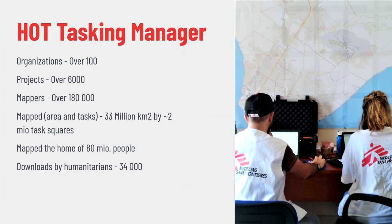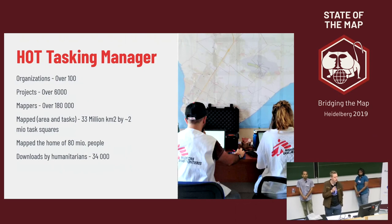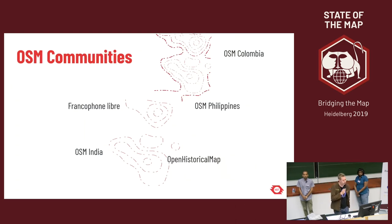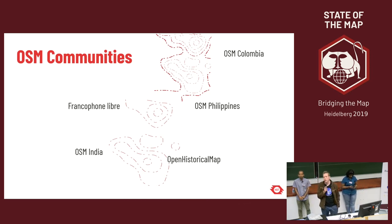The main and largest instance of the Tasking Manager is the HOT Tasking Manager, where it includes over 100 organizations and they have created over 6,000 projects with over 180,000 mappers contributing to an area of 33 million square kilometers, which corresponds to the home of 80 million people. The generated data has been downloaded by humanitarian organizations around 34,000 times. But the Tasking Manager is also used by many communities around the world — from Colombia to the Philippines, in Switzerland, in India, in projects like Open Historical Map and the Francophone Libre.